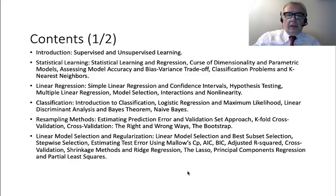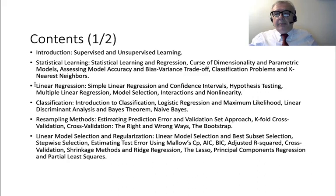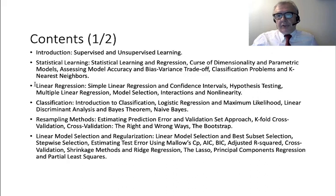These are the course contents, taken from the Stanford course. After an introduction to supervised and unsupervised learning, we will cover statistical learning concepts such as the curse of dimensionality and the bias-variance trade-off. Then we address linear regression — a classical method — because you should not use sophisticated techniques without knowing the basic statistical methods, which often already give good results.